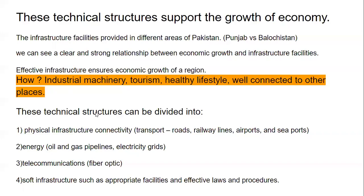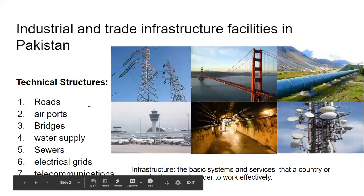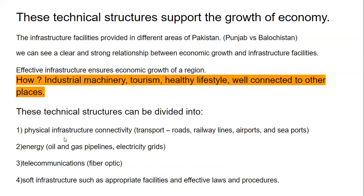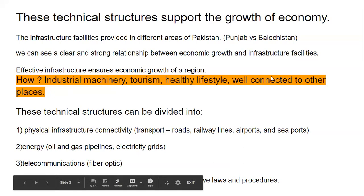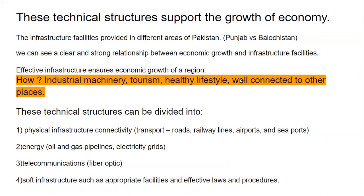These technical structures can be divided into wider categories. First, physical infrastructure connectivity — this infrastructure connects different areas through roads, railway lines, airports, and seaports. Then there is energy as infrastructure: oil and gas pipelines and electricity grids supply energy to different parts of the country, which is very important for industrial machinery. Then there is telecommunication, such as fiber optic networks, which allow people in different areas to communicate. And finally, soft infrastructure, which includes effective laws and procedures that one follows.